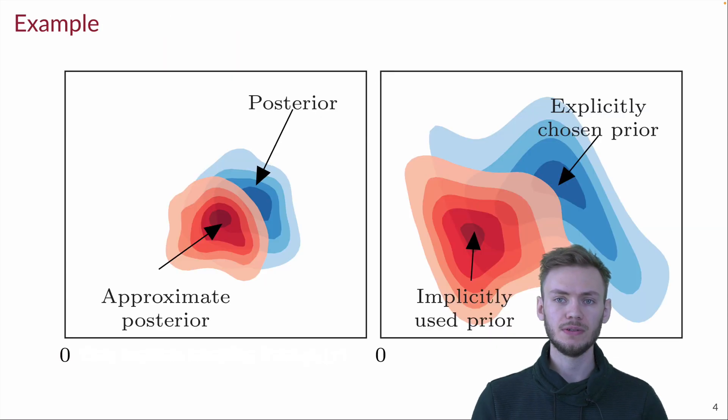To give a toy example of what this looks like, on the left, we have some posterior distribution in blue, which is approximated by some approximation in red. This approximation is a bit off, as we can see, but instead of characterizing the difference directly on the posterior level, we pull it back to the prior level on the right side.